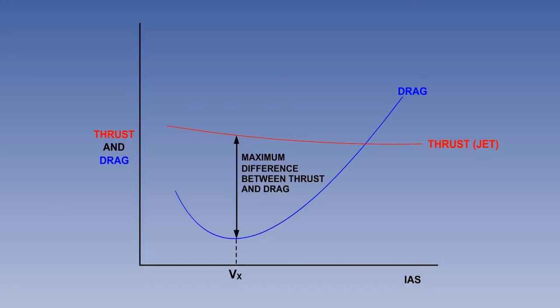This graph shows the variation of thrust with speed for a jet aircraft, where thrust is fairly constant with speed. And VX is close to, or coincident, with VMD.